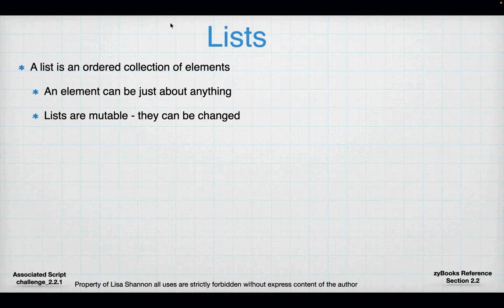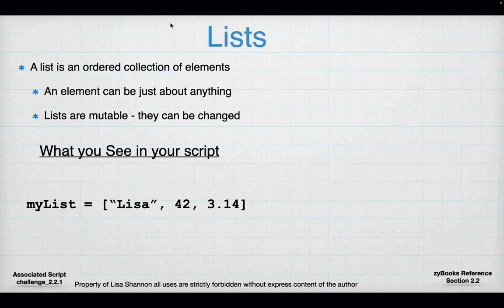It's important to understand what a list is because you're going to use this for the next two modules. A list is an ordered collection of elements — an element can be just about anything — and lists are mutable, which means they can be changed. I have a variable called my_list. I know it's a variable because it's on the left-hand side of a single equal sign.